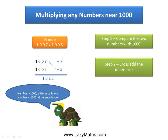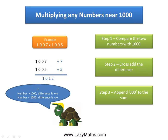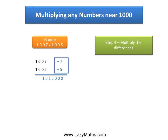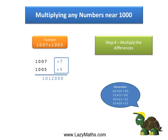The next step is to simply append three zeros to 1012 to get 1,012,000. After that, we simply need to multiply the differences: positive 7 and positive 5. Multiplying a positive number with another positive number gives a positive answer, so positive 7 times positive 5 gives us positive 35.